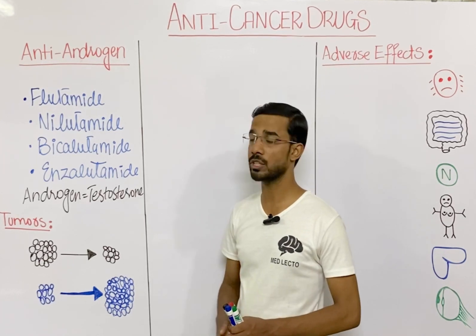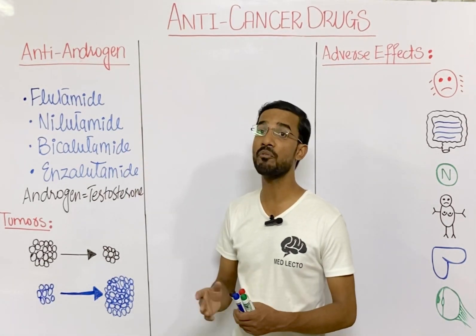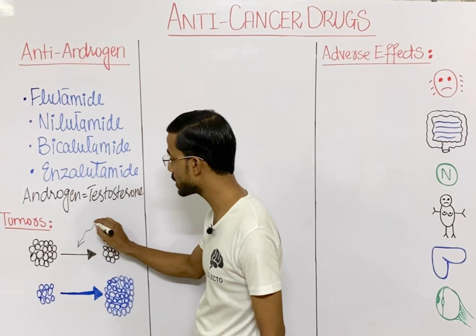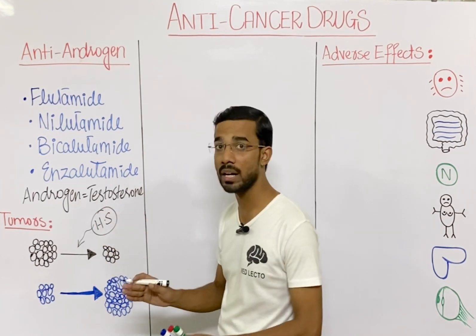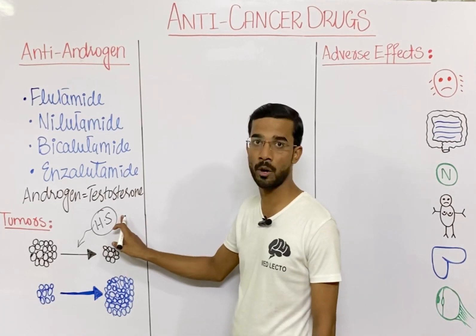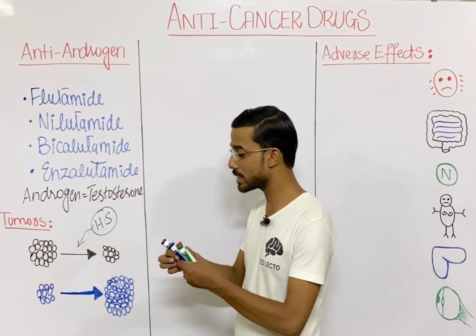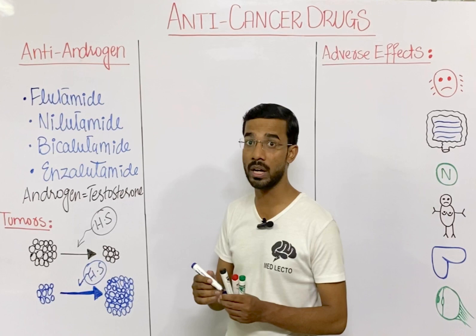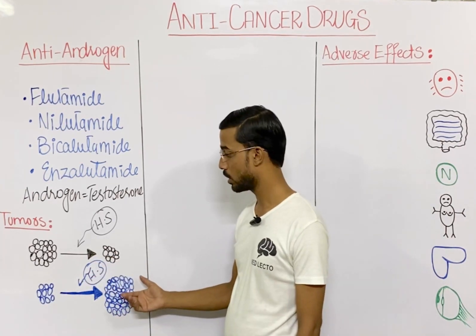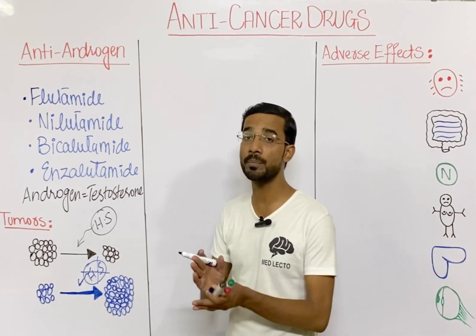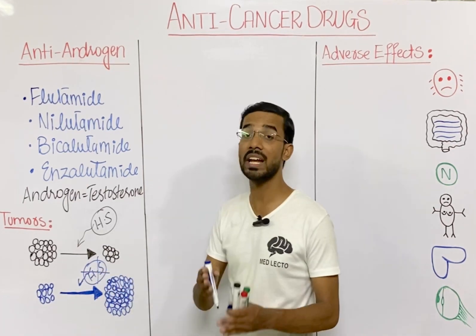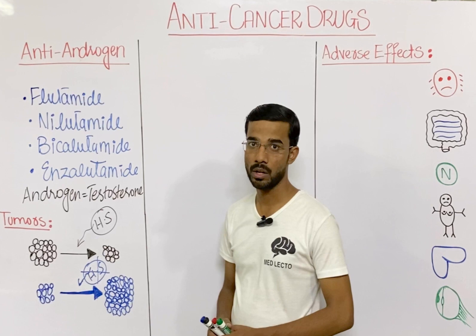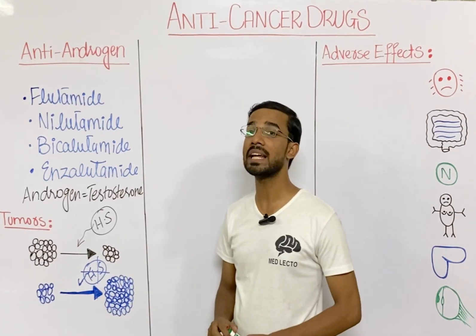Before we start the mechanism of action of all these four drugs, we will revise the types of tumors. Basically there are some tumors that, when they get the hormonal stimulus, start progressing. If we stop the hormonal stimulus, then we can stop the progression of these tumors. These are called hormone-dependent tumors, and that is the category where anti-androgen drugs apply.